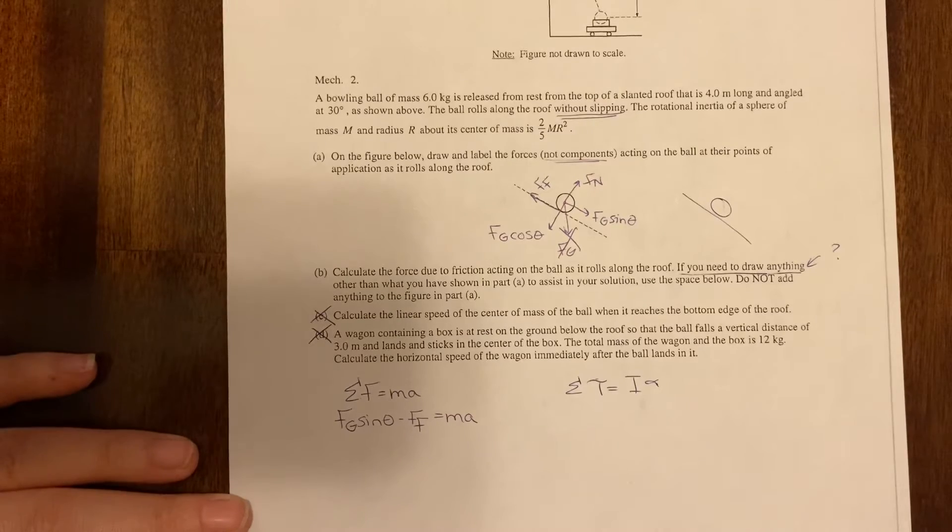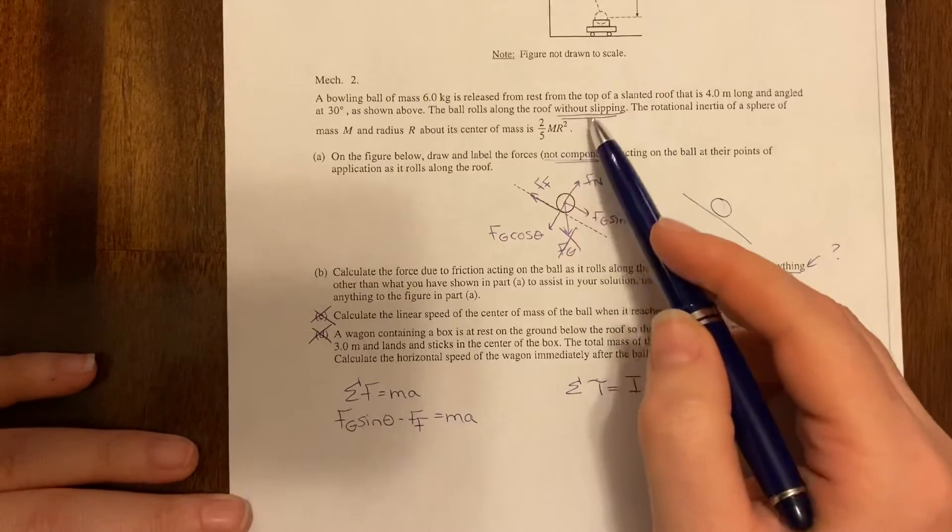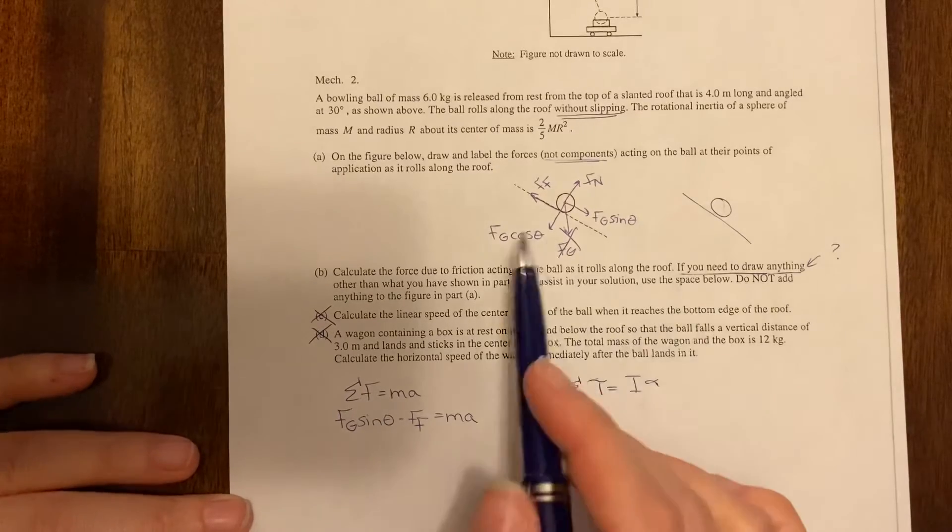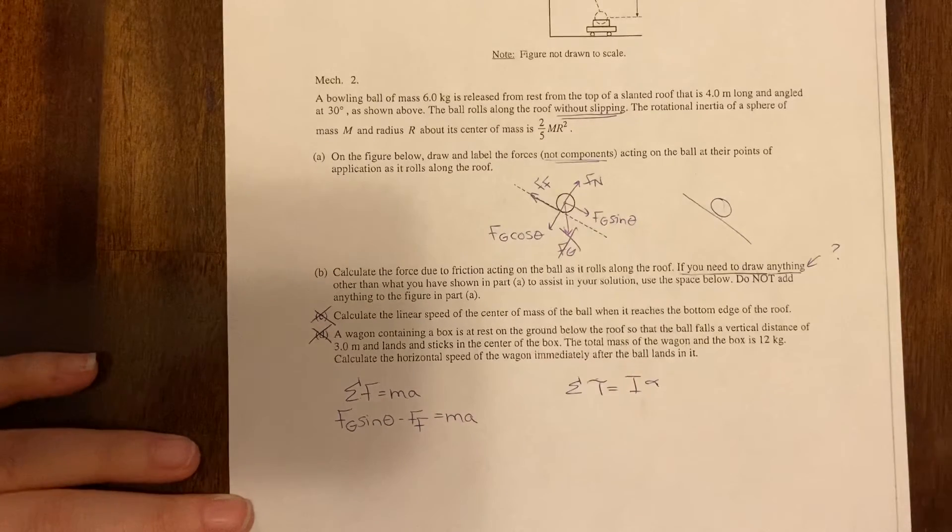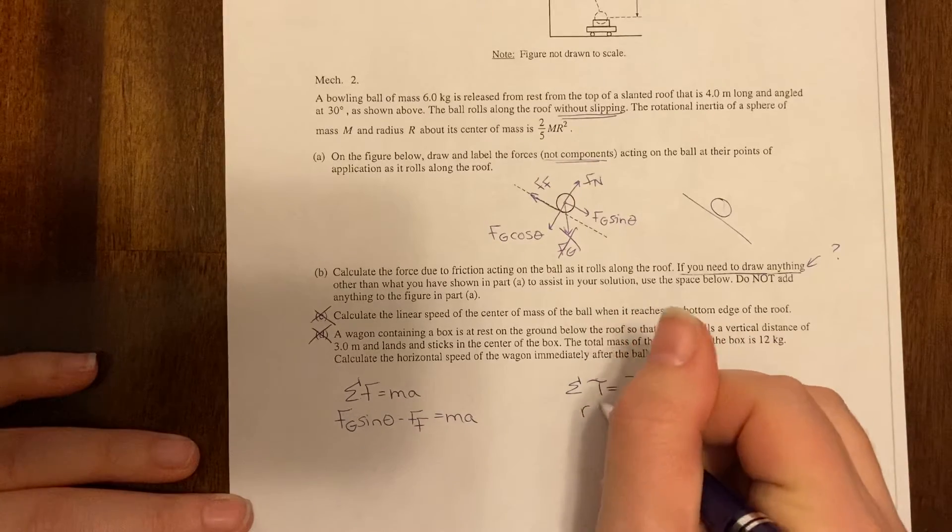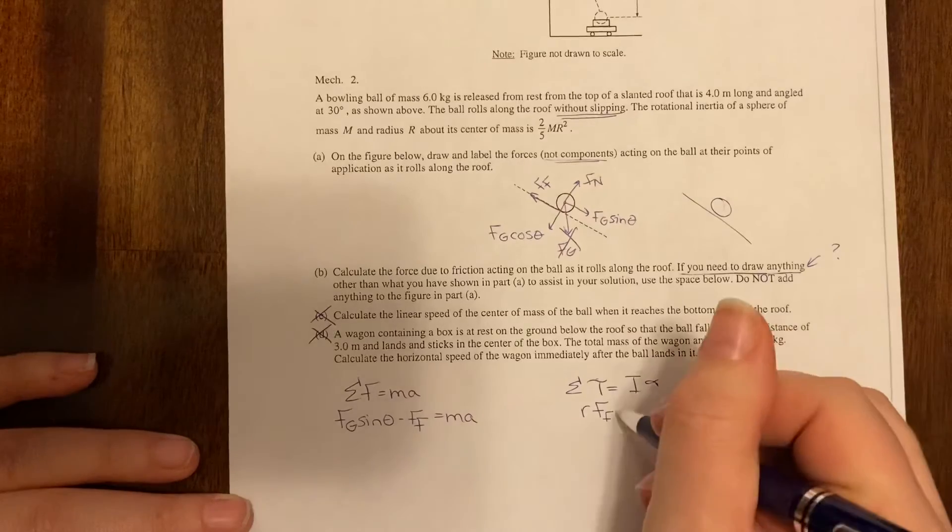Next thing we want to do is we want to figure out what's going on with the torque. So which if any of these forces cause torque? Well we know that it is rolling without slipping so something must be causing torque. So the thing that's causing torque is the force of friction or the force that's not applied at the center. Okay so we know that torque is equal to radius times force or in this case it's the force of friction.